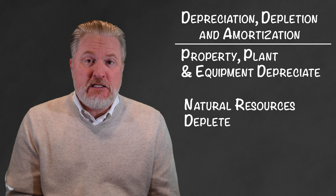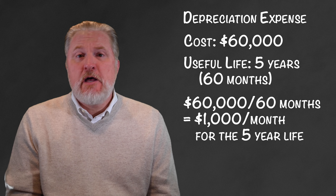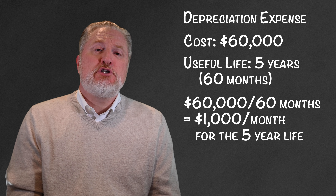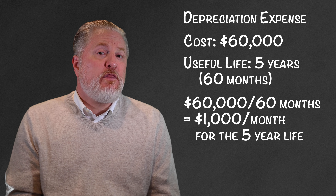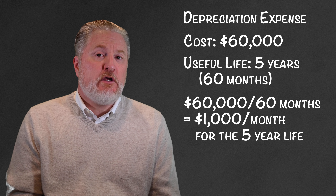In straight-line depreciation, the value of the asset declines by the same amount each year. For example, if you bought a new vehicle for $60,000 with a useful life of five years, we divide the $60,000 by 60 months, making our depreciation expense $1,000 per month for five years.